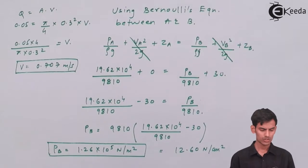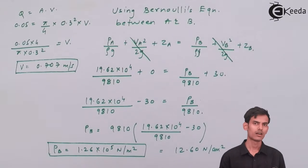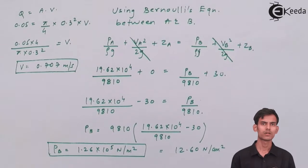Since the pressure at A was given in terms of Newton per centimeter square, it's more proper to write the same pressure at B in the same units. Even if you keep it in Newton per meter square, there's no problem, it's one and the same.